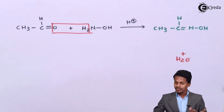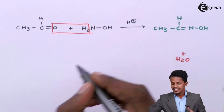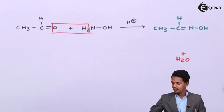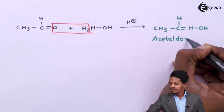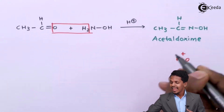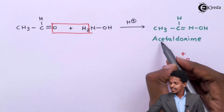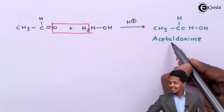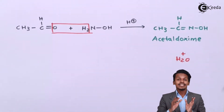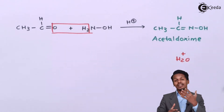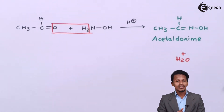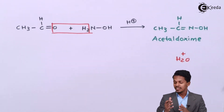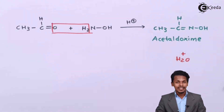The name of this oxime — since it has been obtained from acetaldehyde — is acetaldoxime. It is an aldoxime obtained from an aldehyde. This was the reaction where an aldehyde was treated with hydroxylamine.